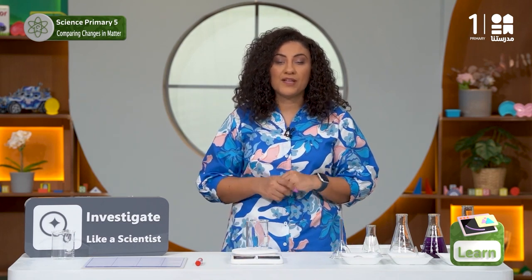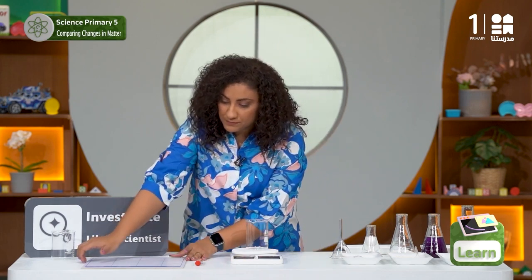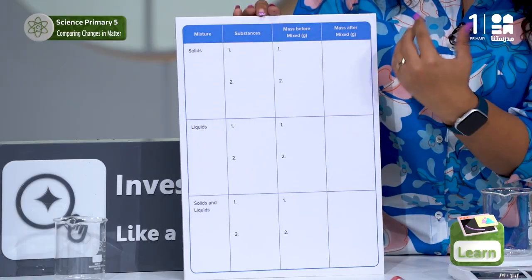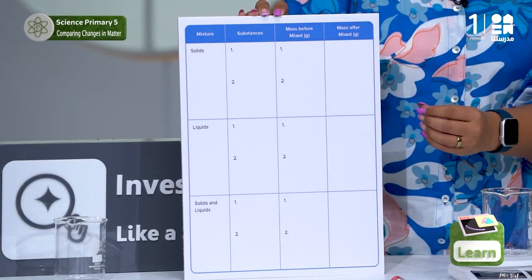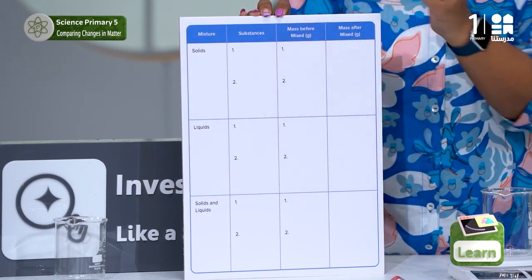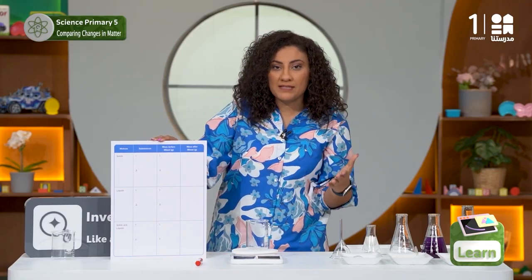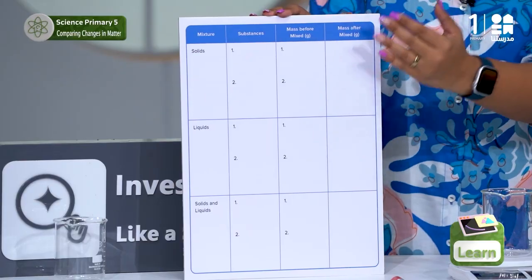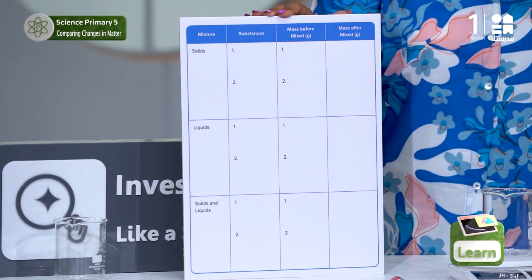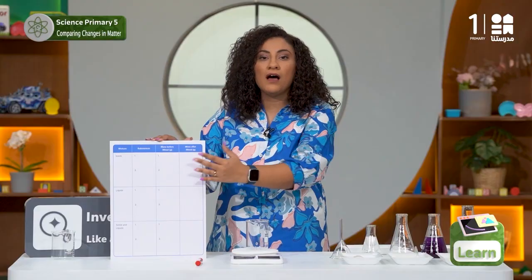You may have observed that we have a lot of solids and liquids. We will start mixing two solids together, then two liquids, and finally a solid and liquid together. You will record data in the table we have here. We will write the substance of the mixture, measure the mass of each substance before mixing, and record the total mass of the mixture after mixing.